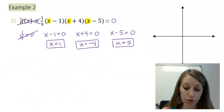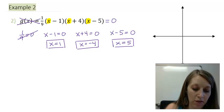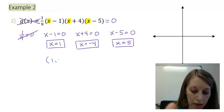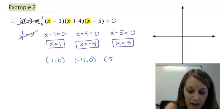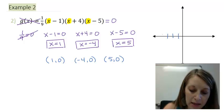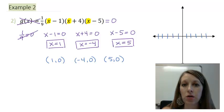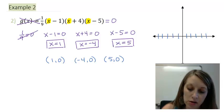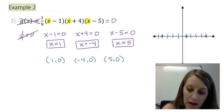Moving on to example two, I had three zeros because this was a degree three polynomial. In intercept format, that gives me (1, 0), (−4, 0), and (5, 0). Let me plot them on the x-axis: my first at (1, 0), second at (−4, 0), and last at (5, 0).